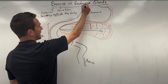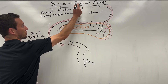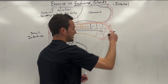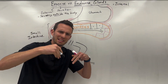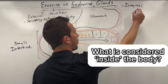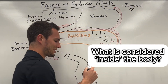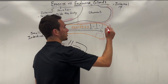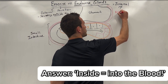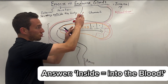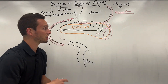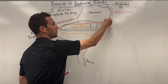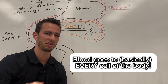You can contrast that with endocrine. 'Crine' still means secretion, but 'endo' refers to internal. So in this case we're going to be secreting things into the body — but that begs a question: what is considered inside the body? Internal secretion means we're dumping it into the bloodstream, so endocrine cells are going to be dumping their secretion into the bloodstream, and the bloodstream goes to every cell of the body.